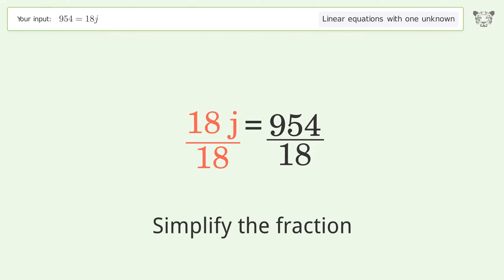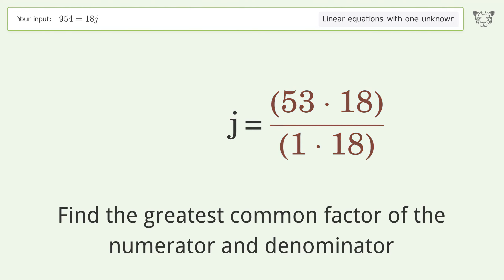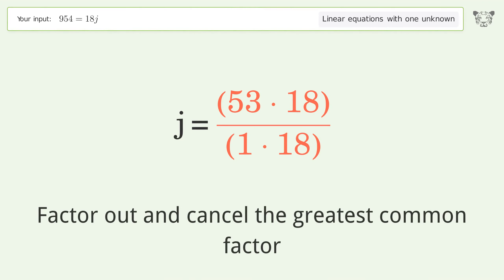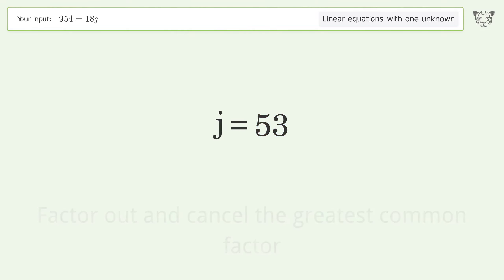Simplify the fraction by finding the greatest common factor of the numerator and denominator. Factor out and cancel the greatest common factor. And so the final result is j equals 53.